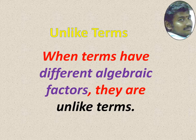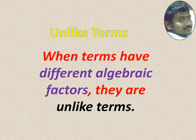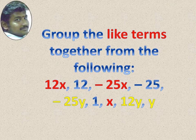So, like terms and unlike terms. For example, x, 2x, 5x, minus 7x — all are like terms. x, y, a, b, minus z — all are unlike terms.